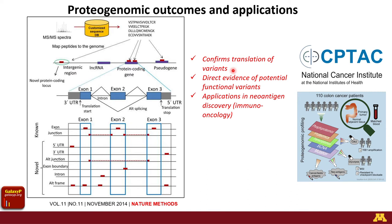Proteogenomics has a lot of power and many applications. You can confirm translation of variant amino acid sequences into stable proteins with potential functional effects in disease contexts. It can be used for neoantigen discovery — novel protein sequences recognized by the immune system with applications in immuno-oncology. Proteogenomics has also been a pillar of the CPTAC program, which focuses on proteomic characterization of tumors, using this multi-omic approach for much of that work.